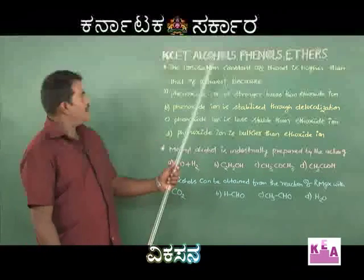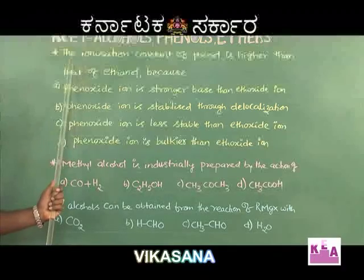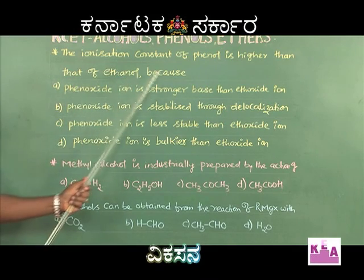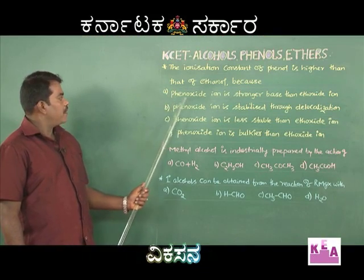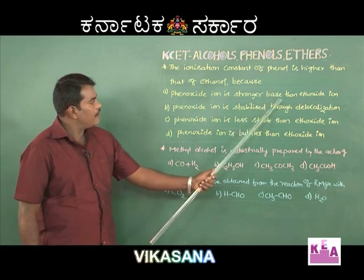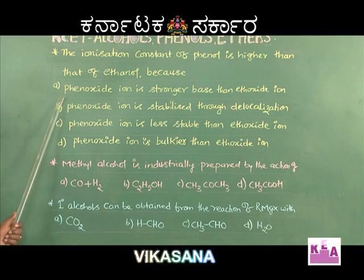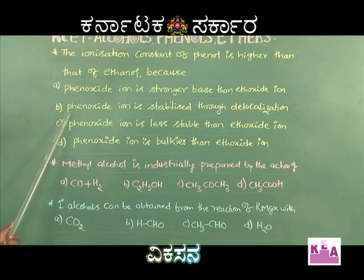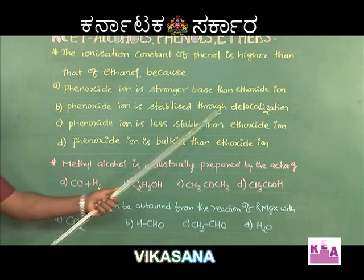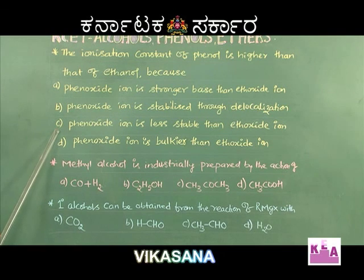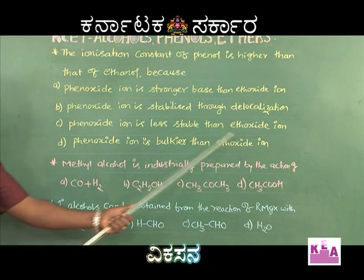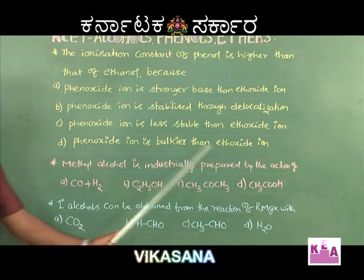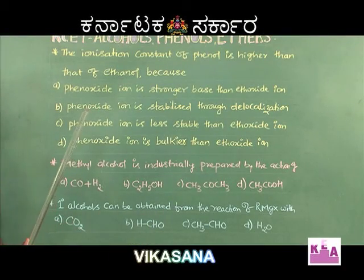Dear students, let us see the next question. The ionization constant of phenol is higher than that of ethanol because — option A: phenoxide ion is stronger than ethoxide ion; option B: phenoxide ion is stabilized through delocalization; option C: phenoxide ion is less stable than ethoxide ion; option D: phenoxide ion is bulkier than ethoxide ion.